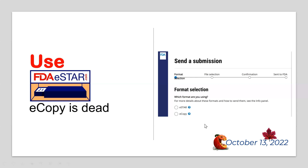We can still do eCopies for the next year — the FDA has allowed it. I'm showing here on the screen the right-hand side, which is what we have for the CCP portal, the customer collaboration portal at the FDA. The top button is for eStars — you click on that and it allows you to upload an eStar PDF template populated with all the information, and it has to be complete. The other option is the eCopy, and for the next year you'll be able to use the old method, which is what we currently use for pre-subs as well.